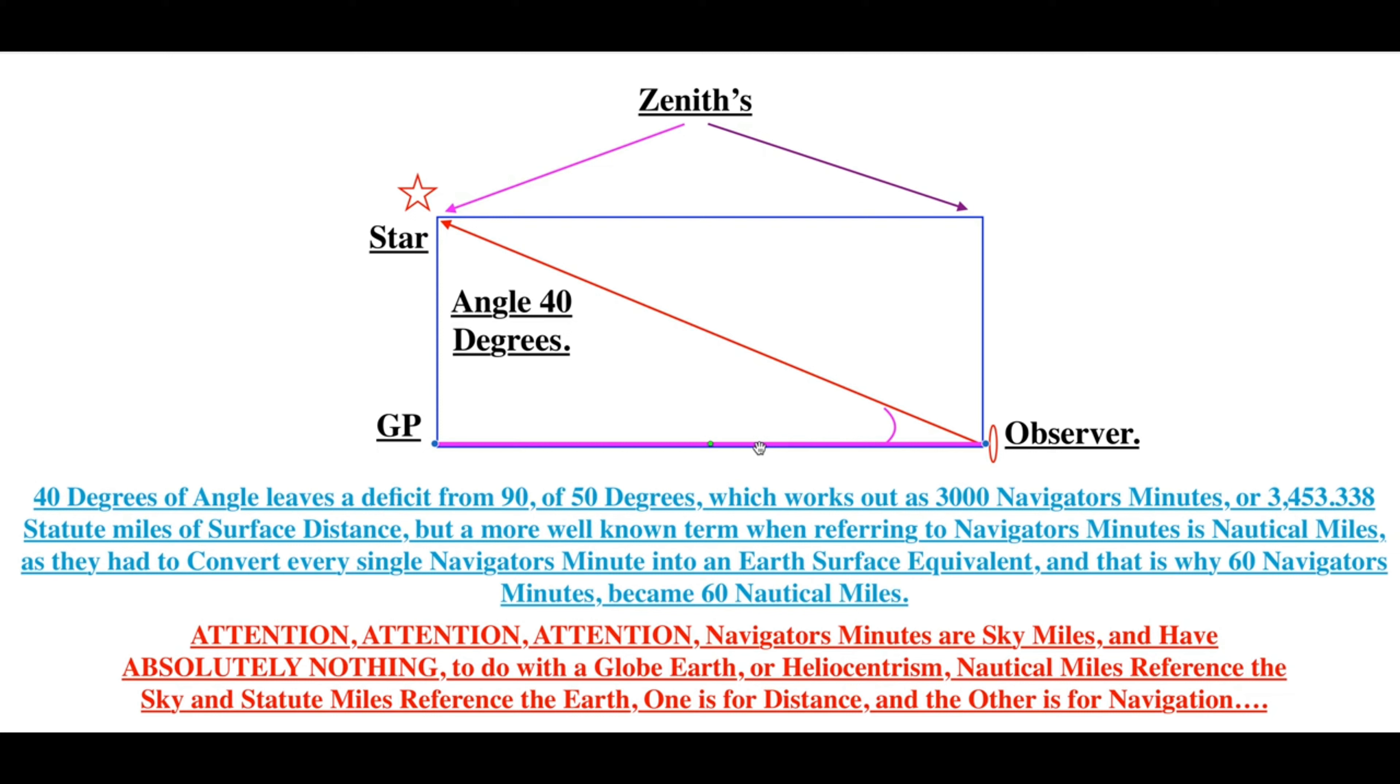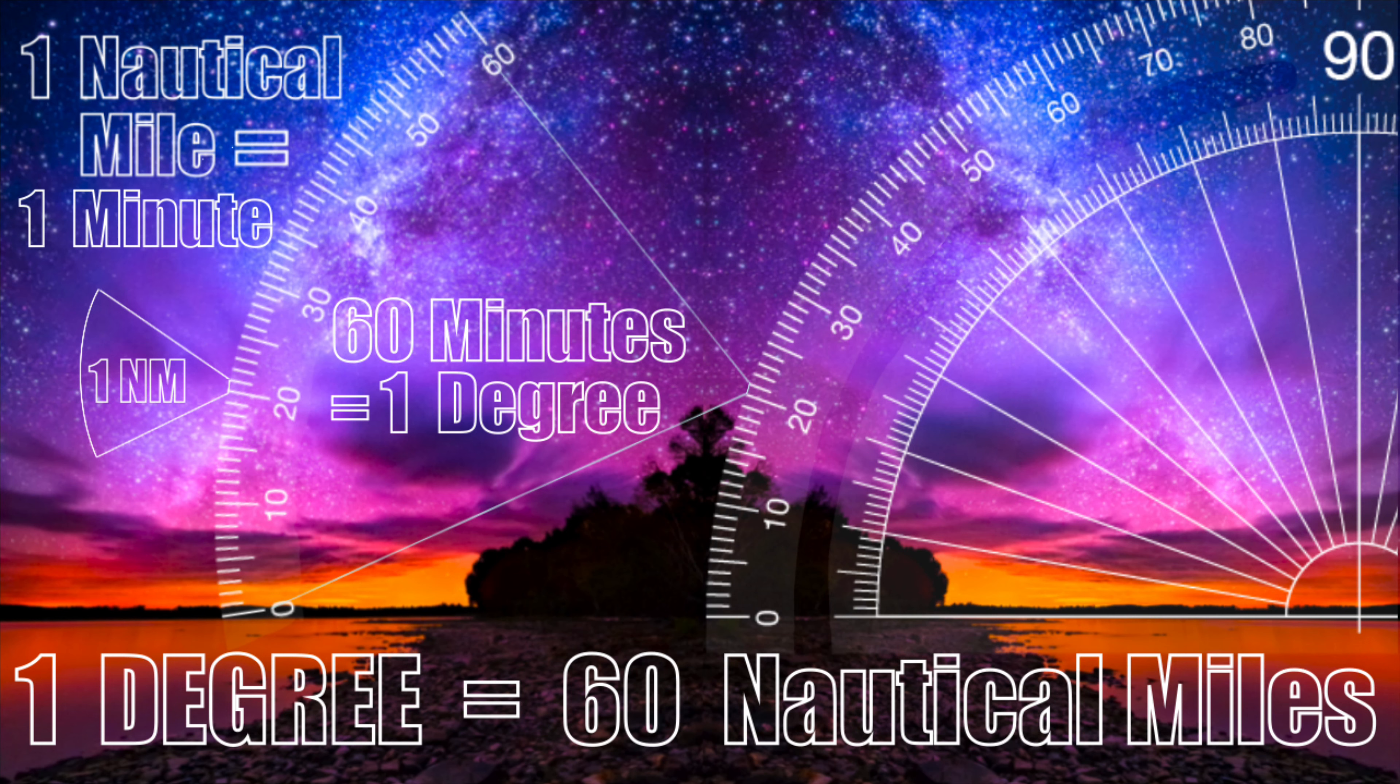That's what's going on. So it has nothing to do with the globe, nothing to do with the center of anything or any other idiotic claim. They're navigator's minutes. That's why there are 60 of them per degree, because 60 nautical miles per degree, because there's 60 navigator's minutes per degree. Now, I can't make it any more simple than this. Either you get it, or you don't get it. Thank you.